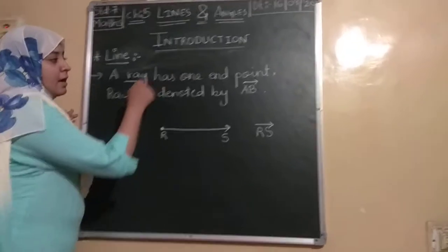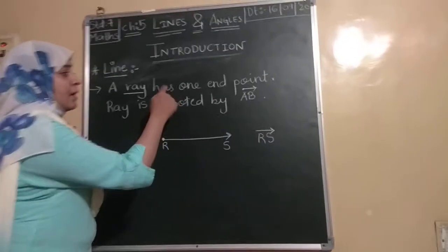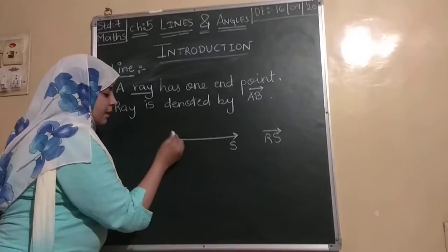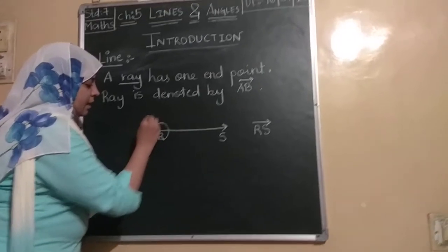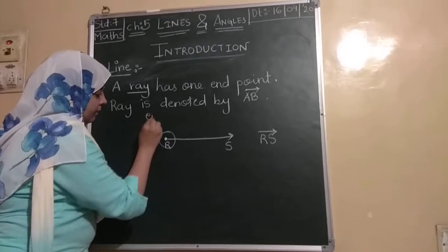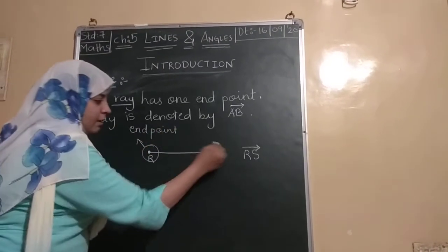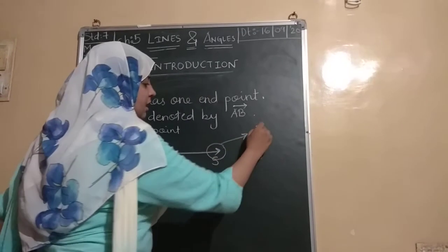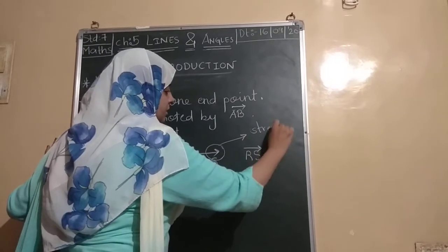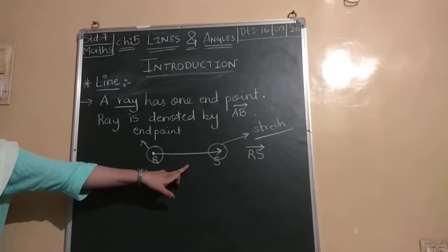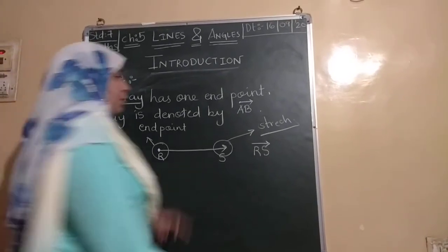As mentioned in the definition, it has one end point. This is its end point. And from the arrow side, we can stretch it as much as we want. Got it? So, this is known as a ray.